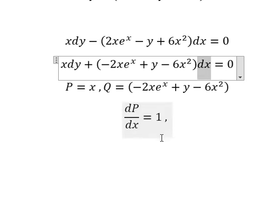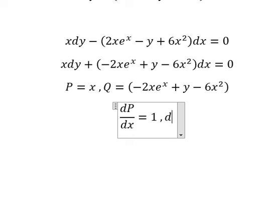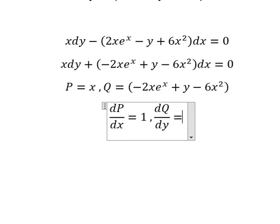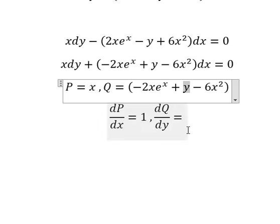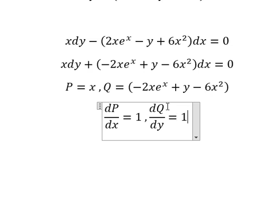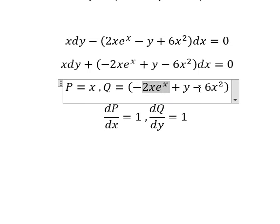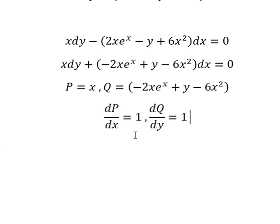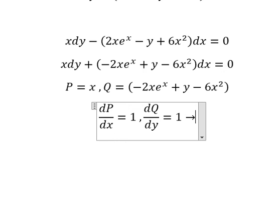We have dx, so we need to do first derivative of Q with respect to y. We just have y here, so we get one. We see that this one equals this one, both are one. So we can say that this is exact.